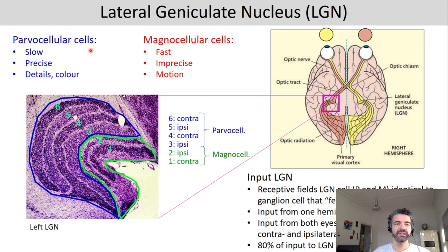The P cells in the LGN, or parvocellular cells, are relatively slow but precise and responsible for example for color and other details. The M cells in the LGN are relatively fast but imprecise, and can be used particularly well to detect motion.